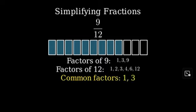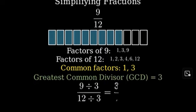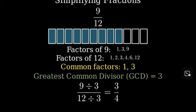we can see that 1 and 3 are the common factors. 3 is the greatest common factor. Now, to simplify the fraction, we divide both the numerator and denominator by 3. 9 divided by 3 is 3, and 12 divided by 3 is 4.